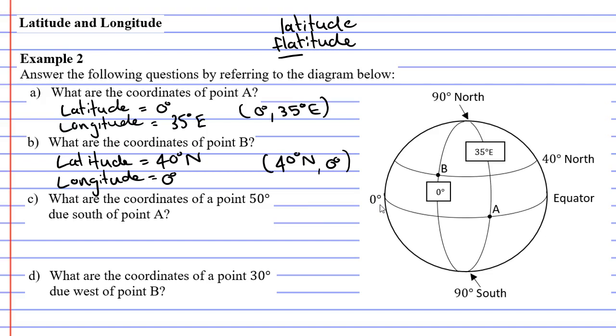Now question C states, what are the coordinates of a point 50 degrees due south of point A? So here's point A, and if we go 50 degrees due south.